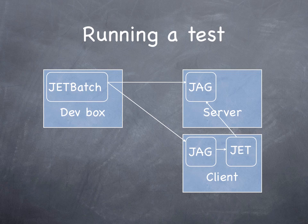Let's walk through an example. It all starts with JET Batch connecting to the JAG on the client machine and the server machine, and uploading the software to be tested there. It then instructs JAG on the client machine to start a JET instance, and JET will start running the test.